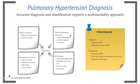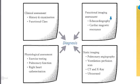To make an accurate diagnosis of pulmonary hypertension, we need to consider a multi-modality approach. First is the clinical assessment, where we undertake history and examination, and assess the patient's functional class from their symptoms. Second is the physiological assessment, which includes exercise testing such as 6-minute walk test or cardiopulmonary exercise testing. It also includes pulmonary function testing to look for respiratory disease, and right heart catheterization for an accurate hemodynamic assessment.